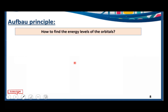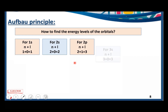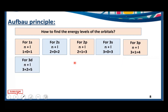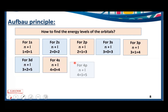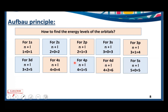Here are the n plus l values for various orbitals: 1s has n+l=1, 2s has n+l=2, 2p has n+l=3, 3s has n+l=3, 3p has n+l=4, 3d has n+l=5, 4s has n+l=4, 4p has n+l=5, 4d has n+l=6, and 5s has n+l=5.